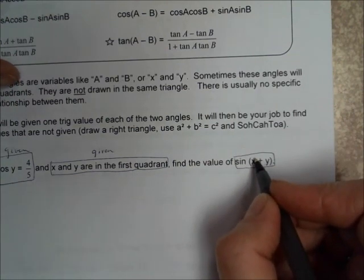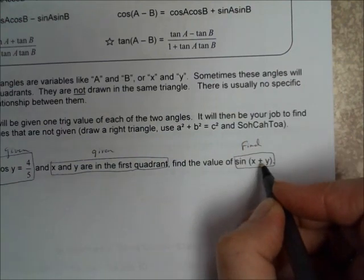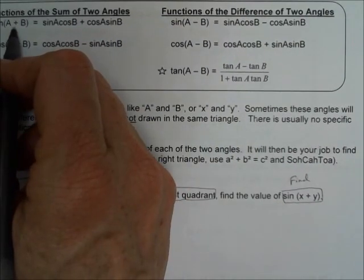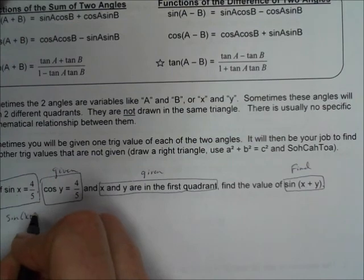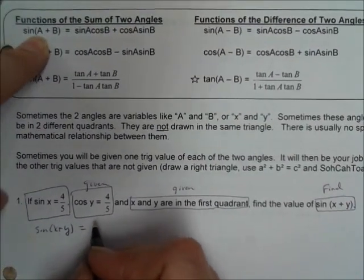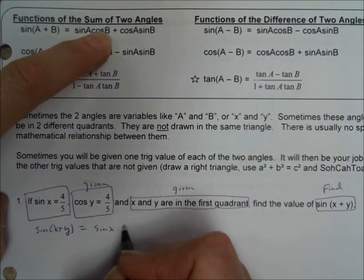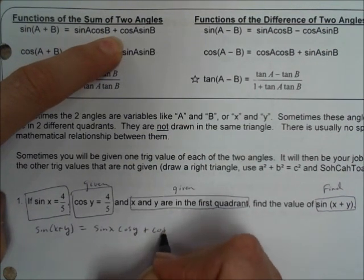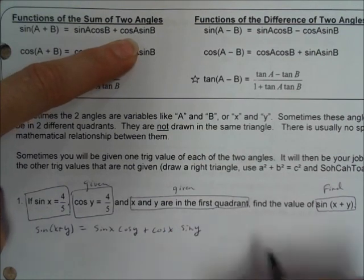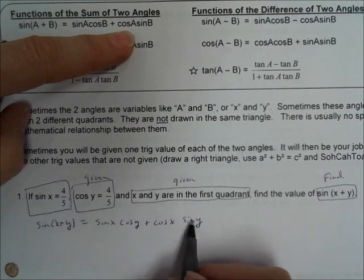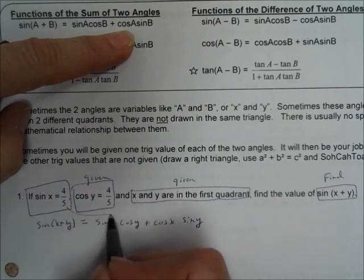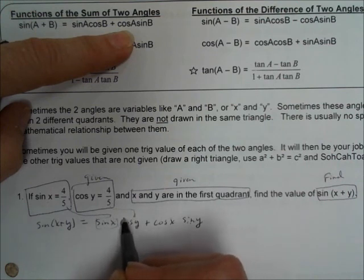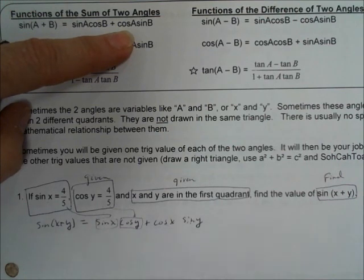Our first step is to take what we want to find and go up to the formula for sine of A plus B and expand it out. So the sine of X plus Y equals the sine of X times the cosine of Y plus the cosine of X times the sine of Y. We need four pieces of information. Right now all we have is sine of X equals four-fifths and cosine of Y equals four-fifths, so we have two pieces but we're missing the other two.